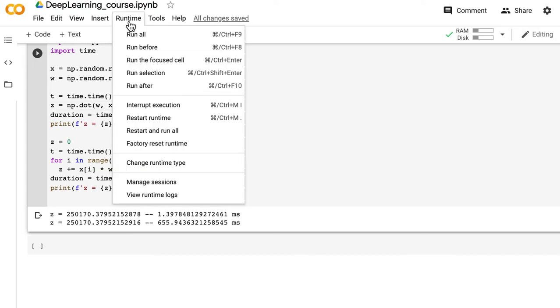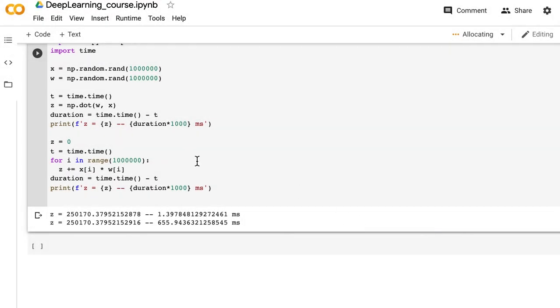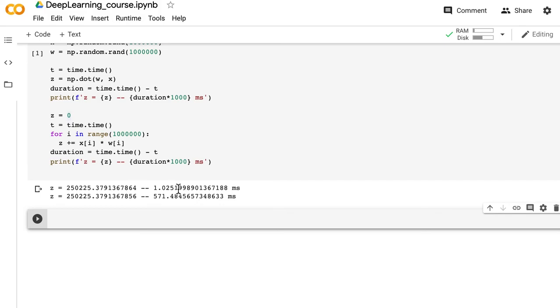This was running on CPU. Let's change the runtime to GPU and run it again. Even on GPU, there's a huge difference close to 500 times. You see slight improvement in performance of both versions because GPU is better at achieving data level parallelization using SIMD instructions.